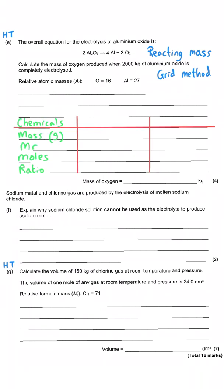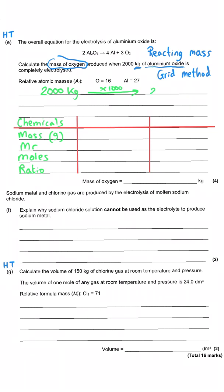When setting out the grid method you need three columns and five rows with labels for each row. The first heading is the chemicals — that's where you write which chemicals you're interested in. We've been asked for the mass of oxygen produced from 2000 kilograms of aluminium oxide, so those are our two chemicals. Note it's 2000 kg — to use the grid we need grams, so we multiply by 1000 to get 2 million grams of aluminium oxide.